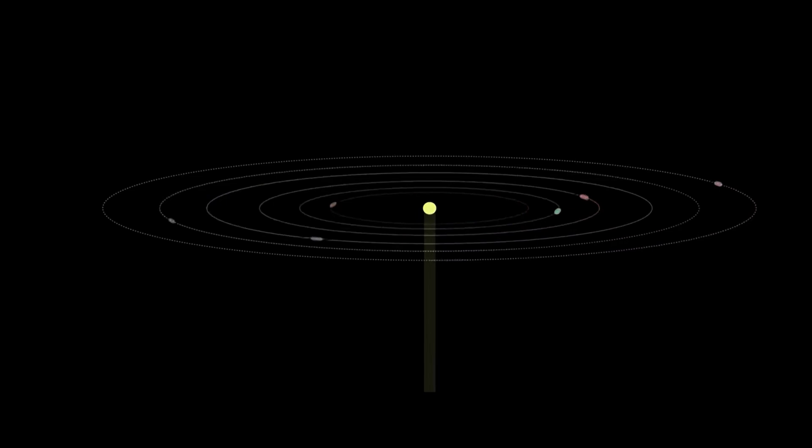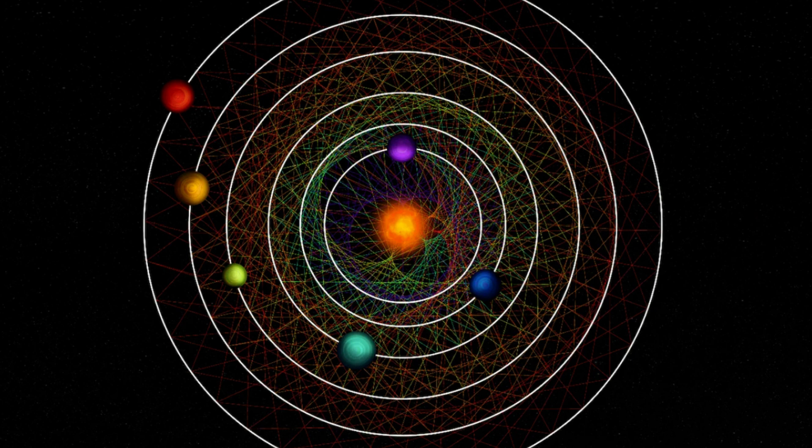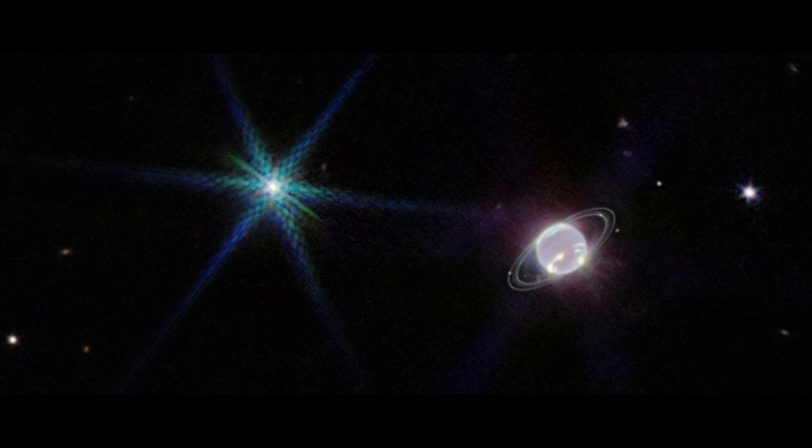This new planetary system will get a close look from NASA's James Webb Space Telescope, which orbits the Sun about a million miles from Earth and is designed to glean information about the atmospheres of exoplanets.